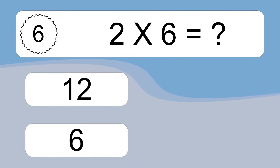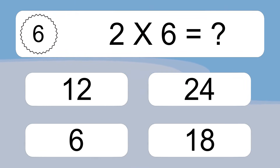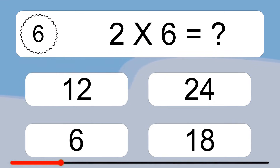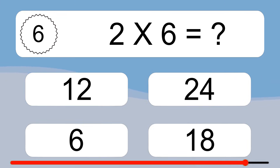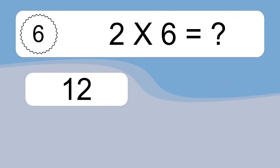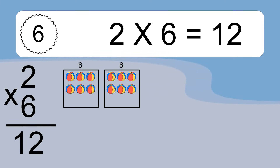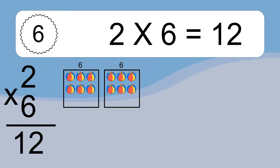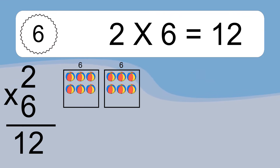2 times 6 equals what? 2 times 6 equals 12. We have 2 boxes, and each box has 6 colorful balls inside. If you count all the balls in all the boxes together, you will have 2 times 6 balls. This equals 12 balls.